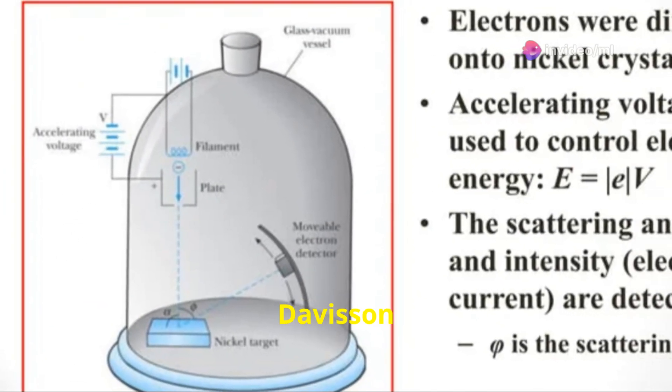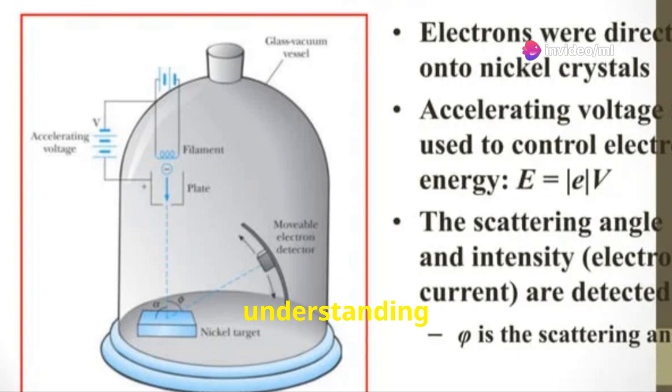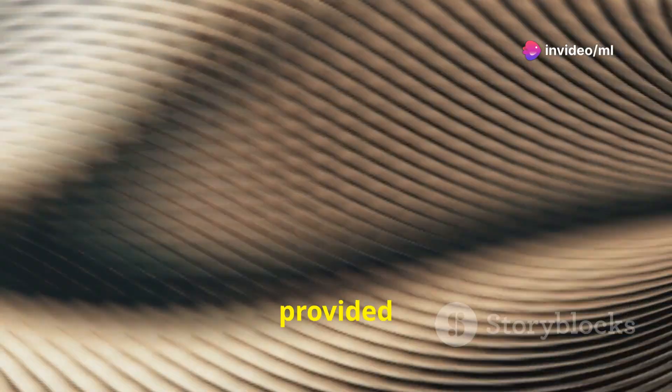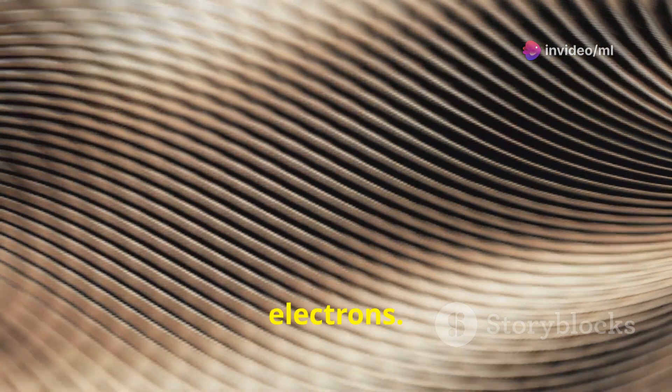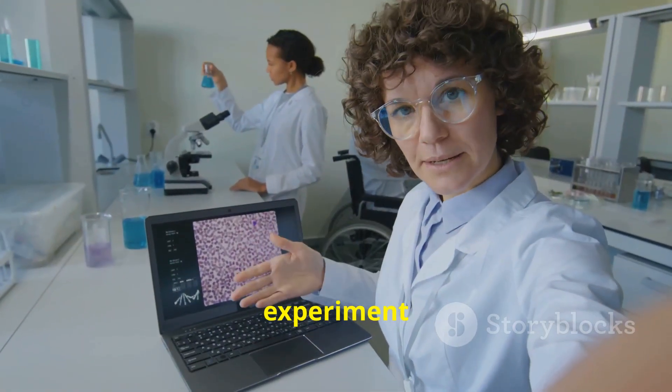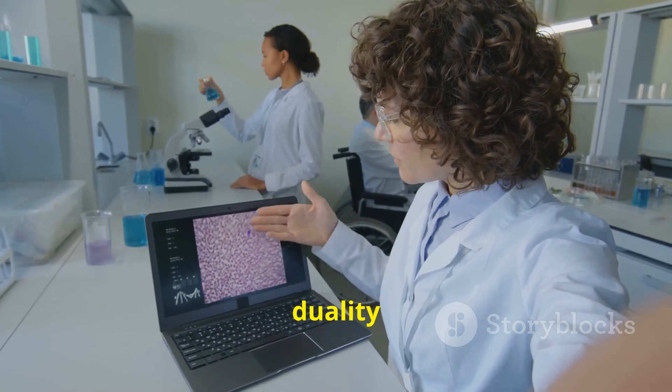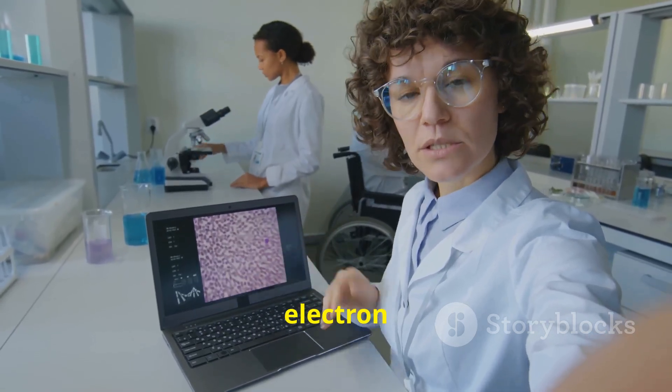In 1927, Davison and Germer changed our understanding of matter. They provided evidence for the wave nature of electrons. Their experiment confirmed wave-particle duality and paved the way for electron microscopes.